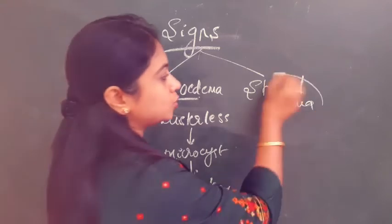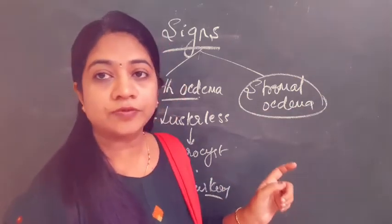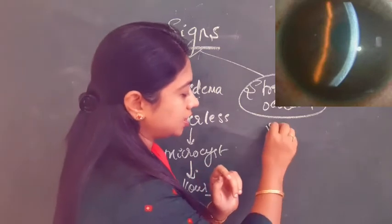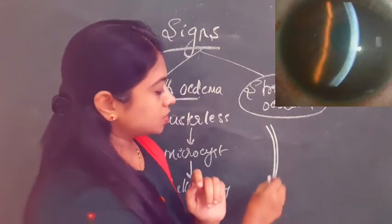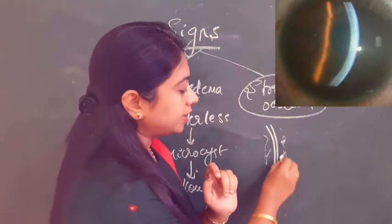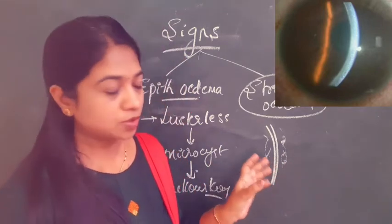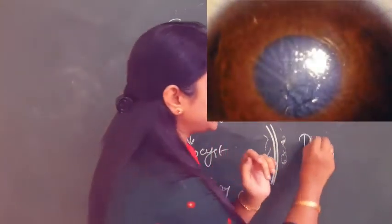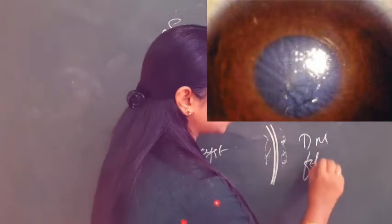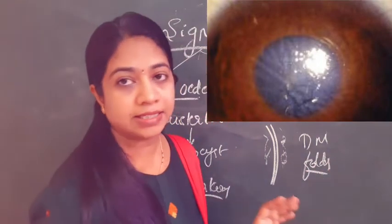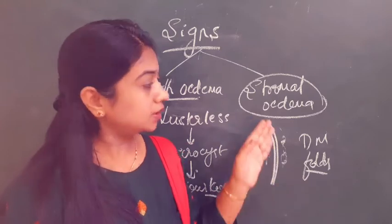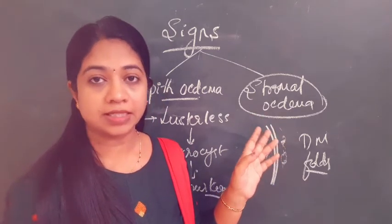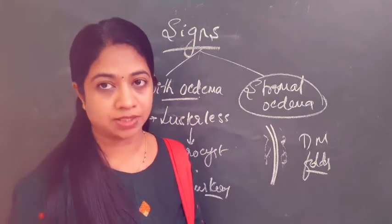For stromal edema — imbibition of fluid in the stroma — when you throw the slit beam on the cornea it appears wider than normal. There will also be the presence of Descemet's membrane folds, which indicates stromal edema. In stromal edema alone, the patient may not experience much pain or discomfort, but there will be decreased vision.